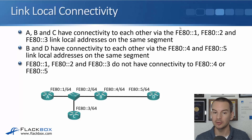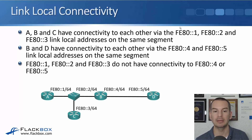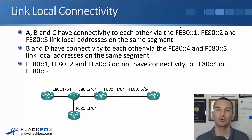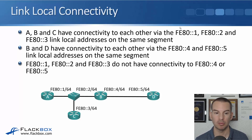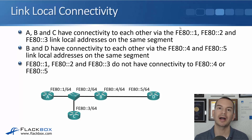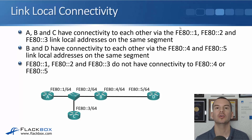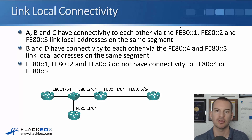Because these are Link Local addresses, FE80::1, FE80::2, and FE80::3 on the link between routers A, B, and C can communicate with each other. And FE80::4 and FE80::5 on the link between routers B and D can communicate with each other as well. But FE80::1, ::2, and ::3 do not have any connectivity to FE80::4 or FE80::5. Link Local addresses — you can send and receive traffic, but it's only valid on that local link and will not be routed out another interface on the other side of a router.